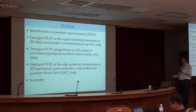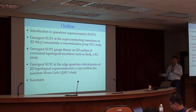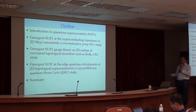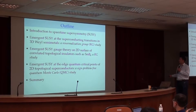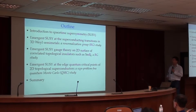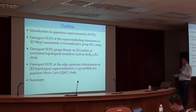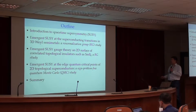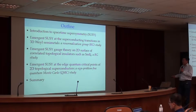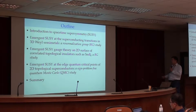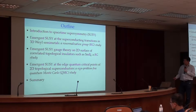Here is the outline of this talk. I will give a brief introduction to the concept of spacetime supersymmetry called SUSY. After that, I will discuss emergent SUSY at the superconducting transition point in a three-dimensional Weyl semimetal. Then I will discuss emergent supersymmetric gauge theory on the surface of a correlated topological insulator such as SmB6. After that, if I still have time, I will discuss emergent supersymmetry at the edge quantum critical point of a 2D topological superconductor. In the end, I will summarize.